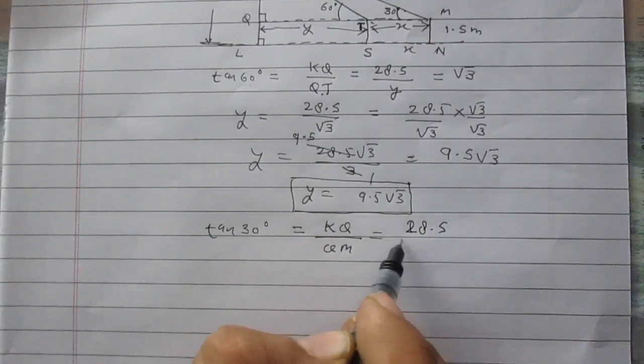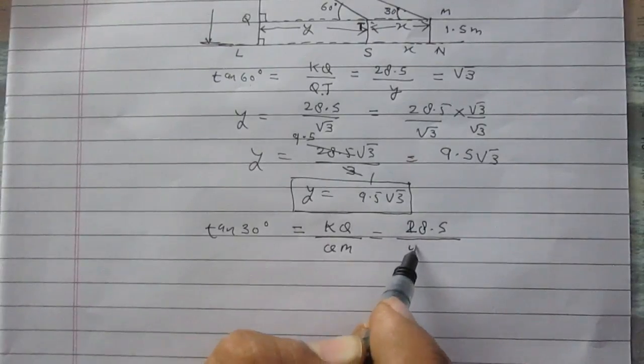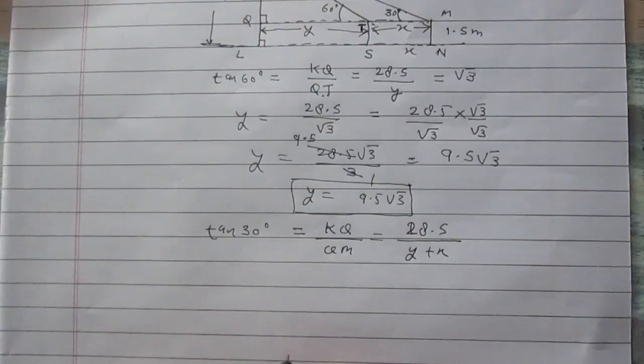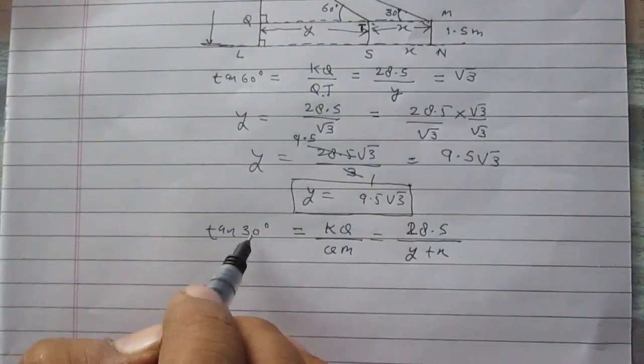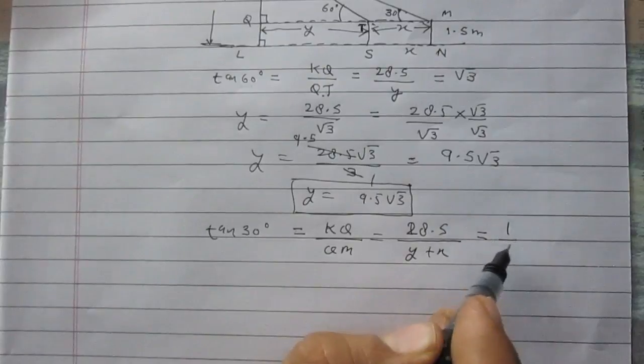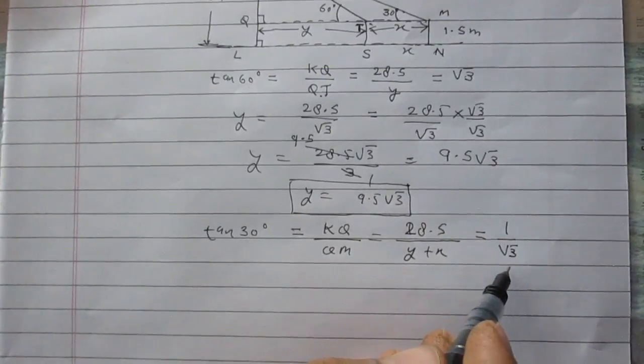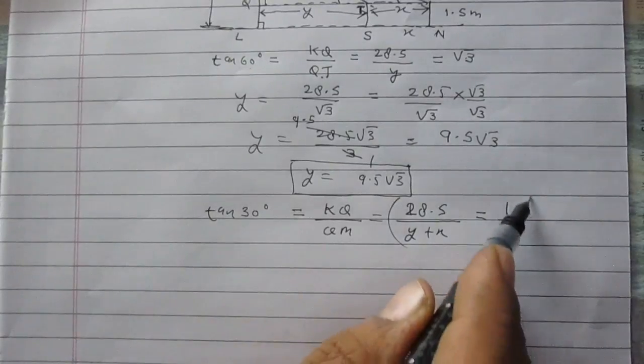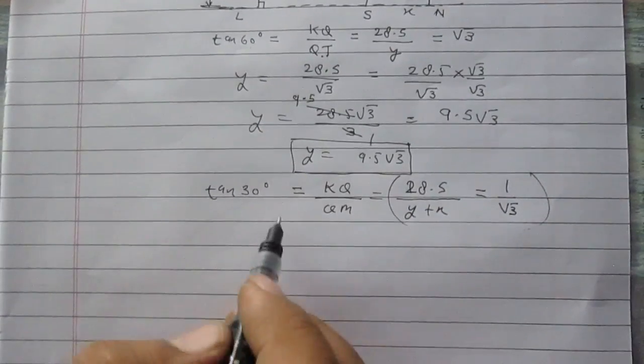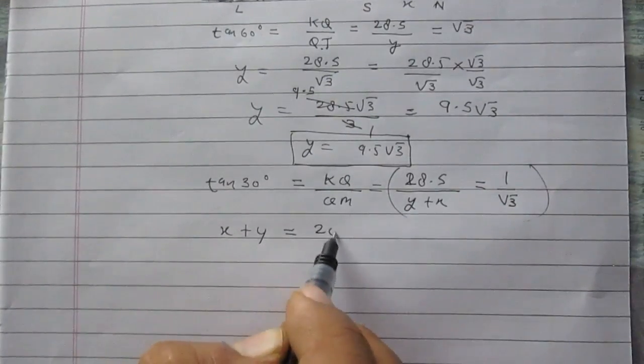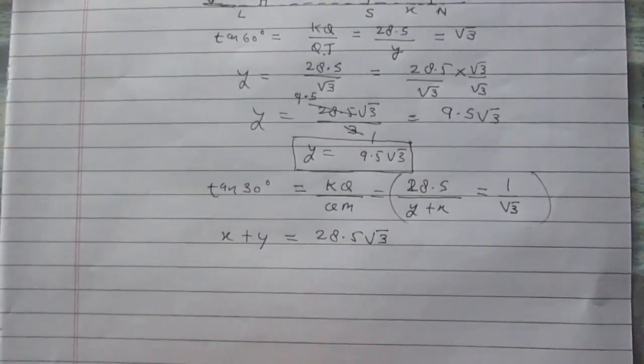tan of 30 degrees is equal to KQ upon the whole length QM, and we know that KQ is 28.5 and QM is Y plus X. Also we know that tan 30 degrees is 1 divided by square root 3. On solving these two sides, we will get X plus Y is equal to 28.5 square root 3.